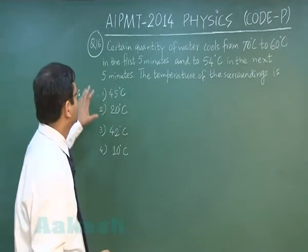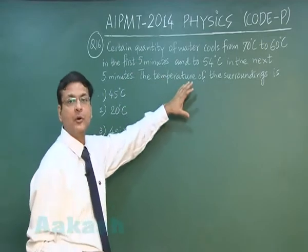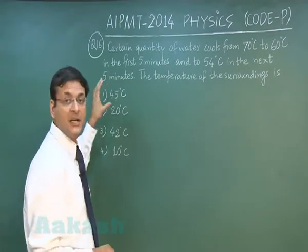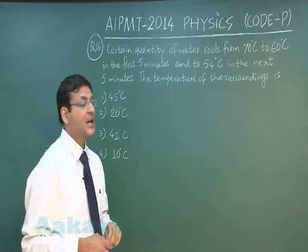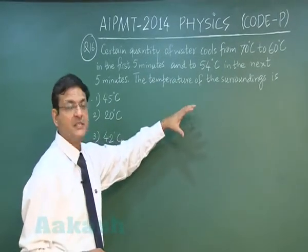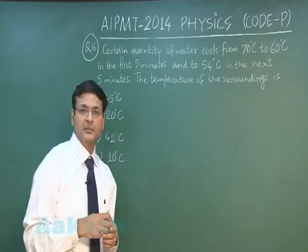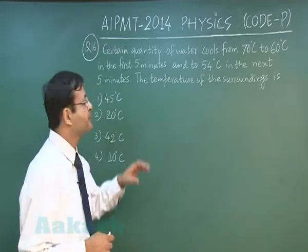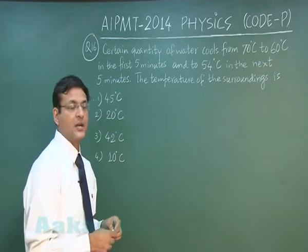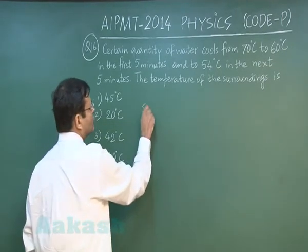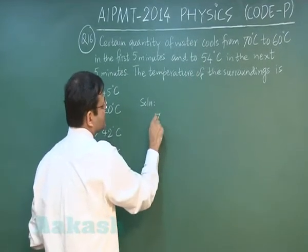In question 16, a certain quantity of water cools from 70°C to 60°C in the first 5 minutes and to 54°C in the next 5 minutes. This is a question where you will be applying Newton's law of cooling. The temperature of the surroundings is what is required to be found.